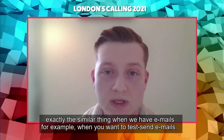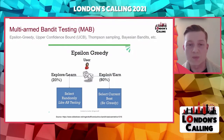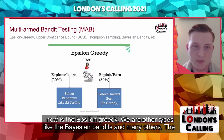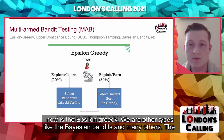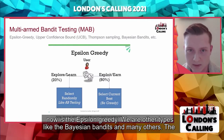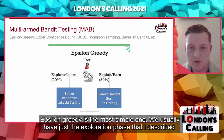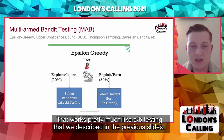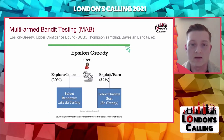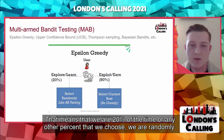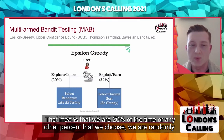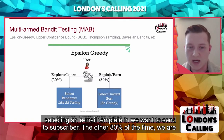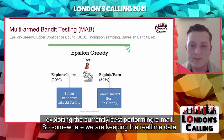We can do exactly the same thing when sending emails. There are different types of bandits — the epsilon greedy, upper confidence bound, Thompson sampling, Bayesian bandits, and many others. The epsilon greedy is the simplest: it has an exploration phase that works much like A/B testing. For example, 20% of the time we randomly select an email template to send to a subscriber. The other 80% of the time we exploit the currently best performing email.